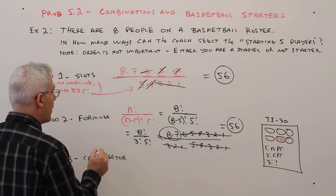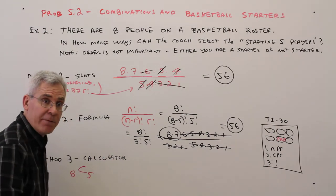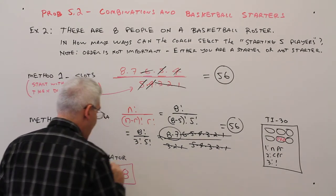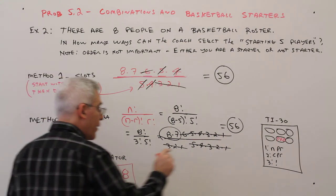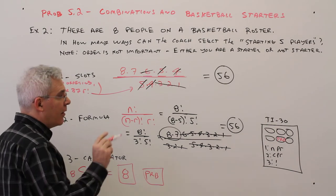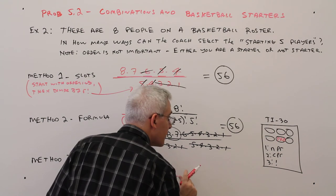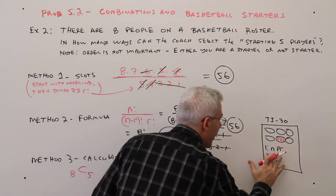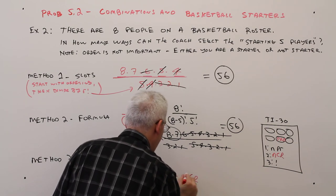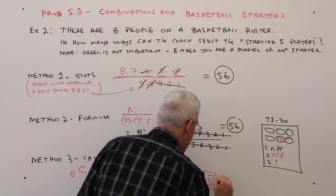we're going to do out of 8 choose 5. So the keystrokes would be, press the 8 key in your calculator, then press the probability key on your calculator, then press number 2, which is, sorry about that, that should be NCR, NCR on your calculator, then press 5, and then press Enter.